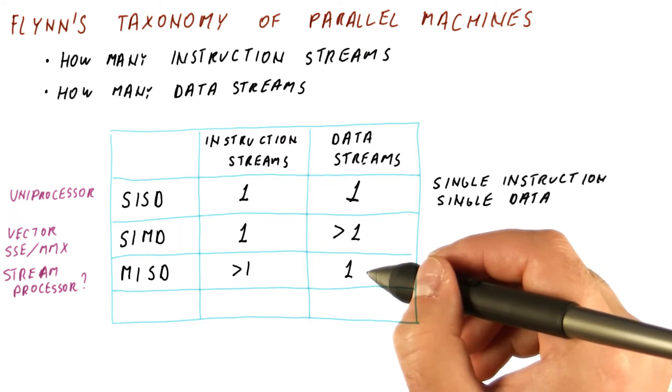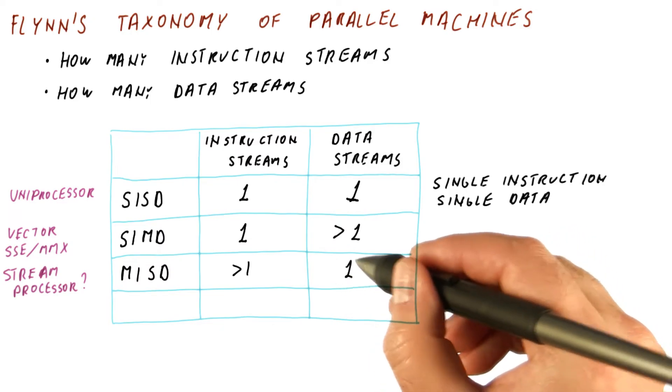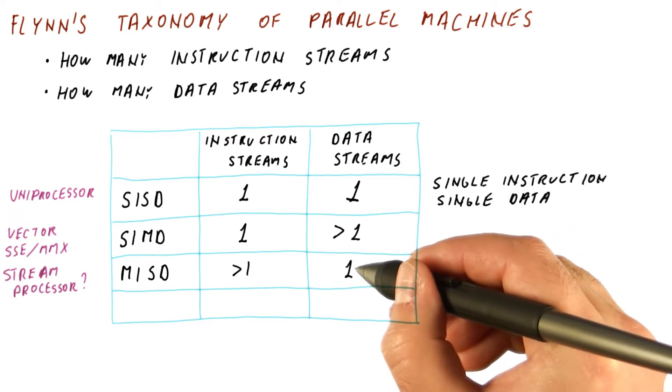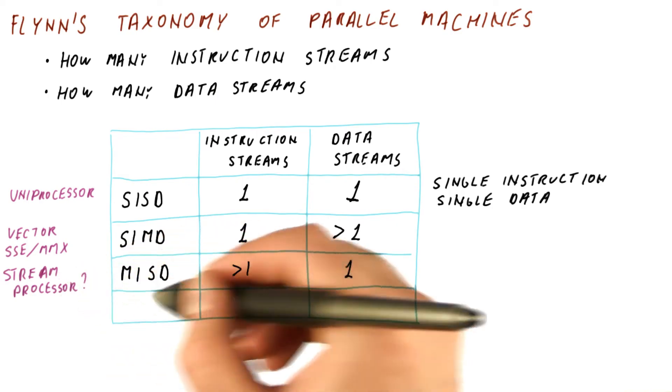But even there, it's not truly that we have a single data stream, because the output of the first processor is not the same as the raw camera feed. This is just the closest we get to it, but really MISD is not used much.